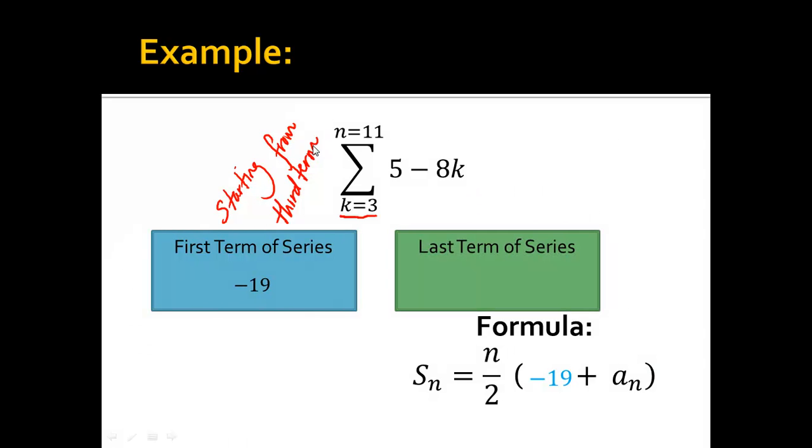Now, I need to do the last term of the series. Well, as in the last problem, I'm going to get that from right here. k is equal to 11. So, everywhere I see a k in the rule, I pop an 11 in its place. And, I get negative 83. That's where that goes.